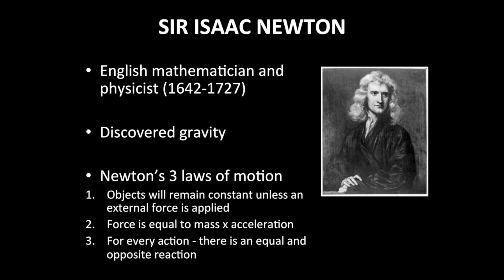Newton also had three famous laws of motion. The first law states that an object will remain at a constant speed unless an external force is applied. That is, to make changes to how the horse is moving — cantering, jumping, or turning — we need to apply force. The second law states that the amount of force is equal to the mass multiplied by acceleration. Since the horse and rider's mass stay constant on course, the amount of force generated by the horse and rider dictates the acceleration of the body, and thus, movement.